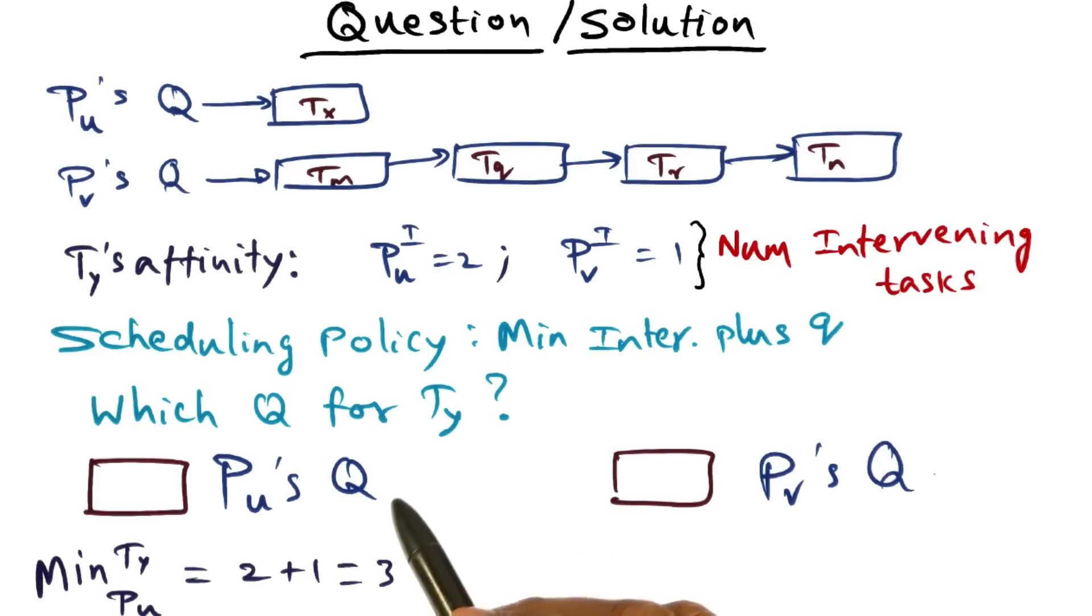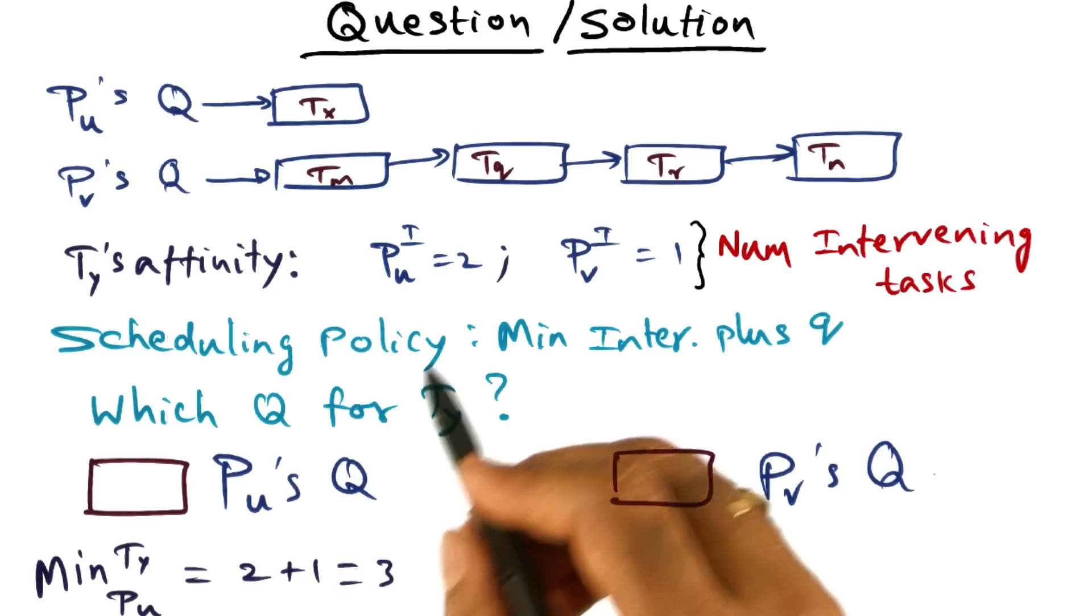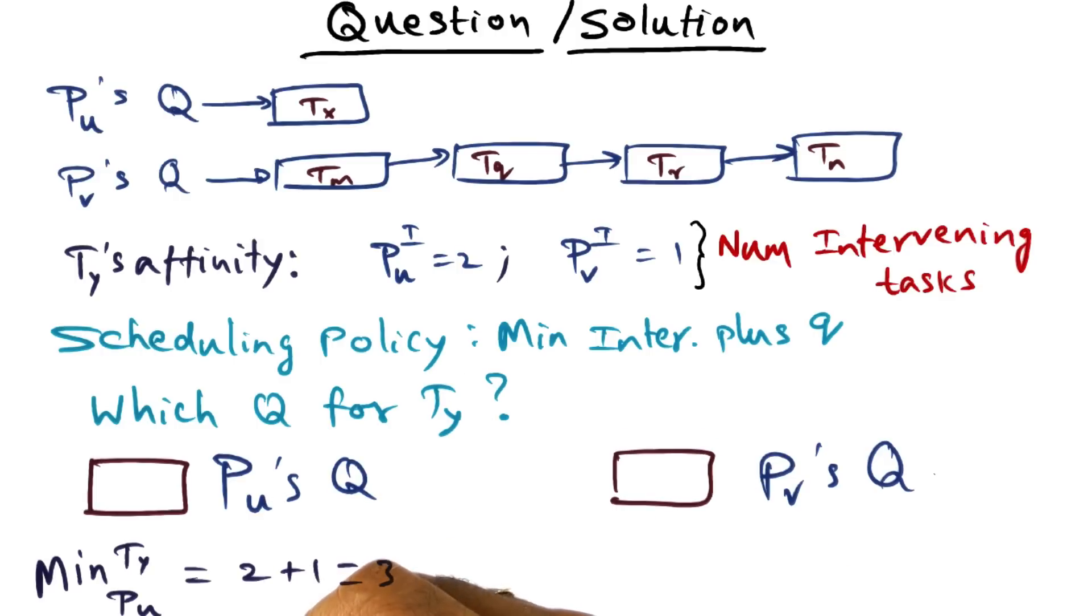Let's walk through and pick the queue on which to place ty based on the scheduling policy. If you ask the question, what is the minimum i plus q for pu for this particular thread ty, that's going to be the affinity that ty has on pu.